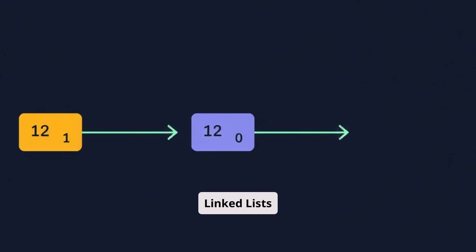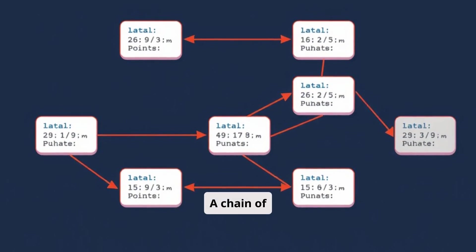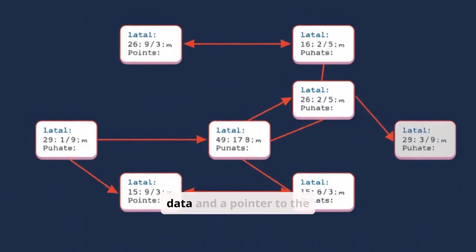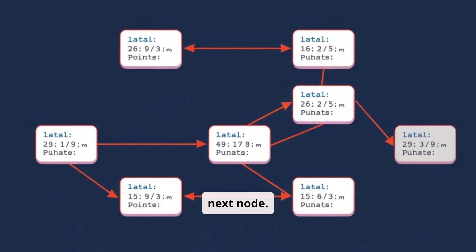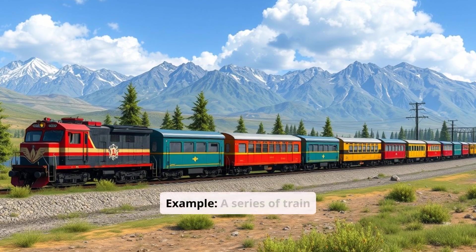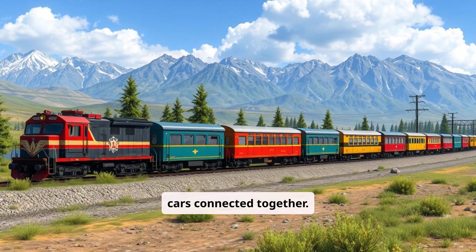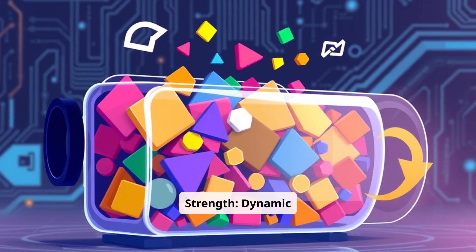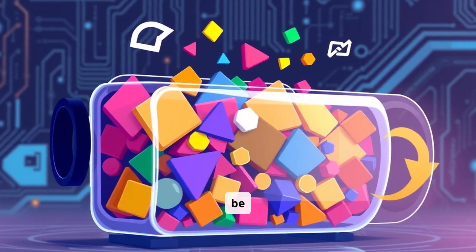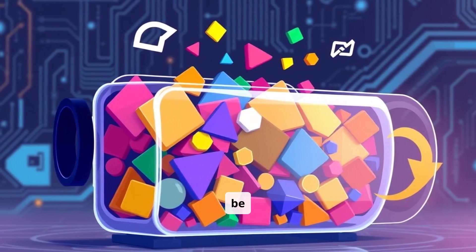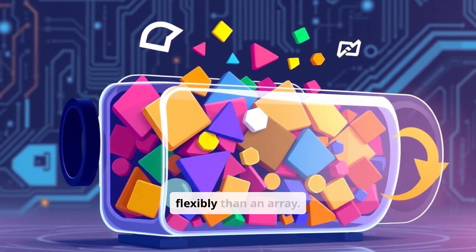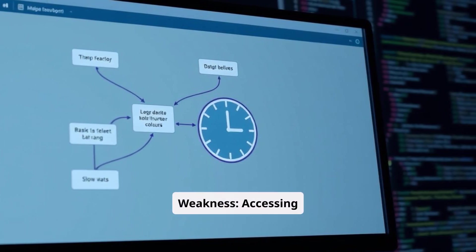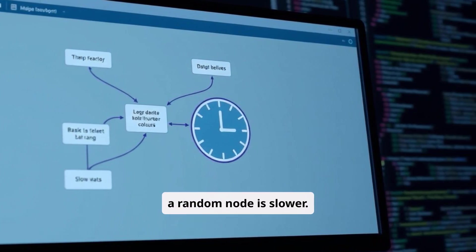Linked lists: a chain of nodes where each node contains data and a pointer to the next node. Example: a series of train cars connected together. Strength: dynamic size — elements can be inserted or removed more flexibly than an array. Weakness: accessing a random node is slower.